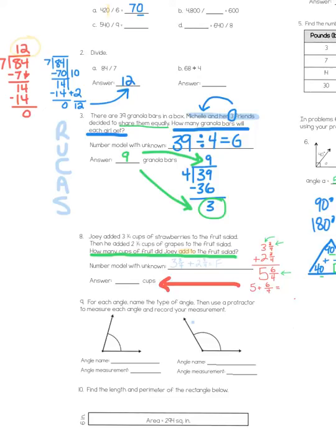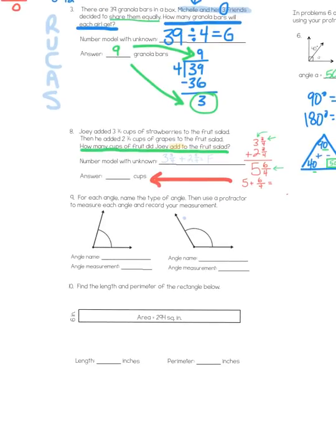Number nine has us measuring angles, and that would be something you have to use a protractor to do. So, I'm going to ignore that one, and we'll come back to it when we have time in class. And then the one thing that we have left to look at is this perimeter and area problem.